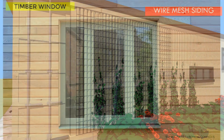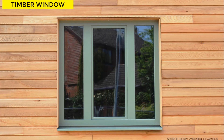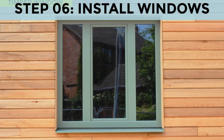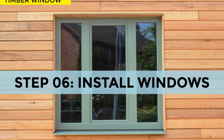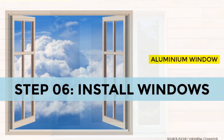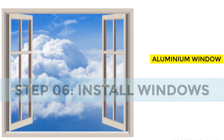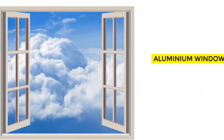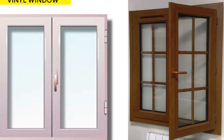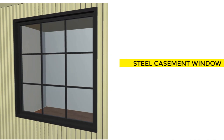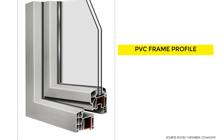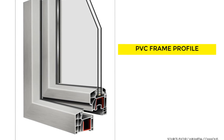With all the prep work completed, the last step is to install the windows. You can install wooden-framed windows, aluminum-framed, vinyl or PVC windows, or steel casement windows. The two window components to consider when installing windows are: one, the window frame, and two, the window shutter.